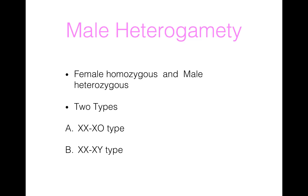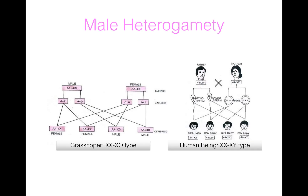First we will see male heterogamety. Male heterogamety means the male is heterozygous while the female is homozygous. Male is heterozygous because it produces two types of sperms. There are two types of male heterogamety: XO type and XY type. First I will explain XO type male heterogamety in grasshopper.